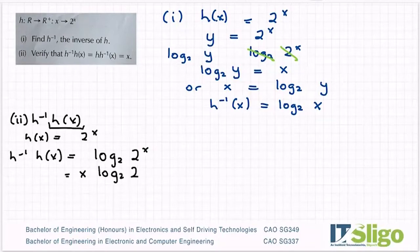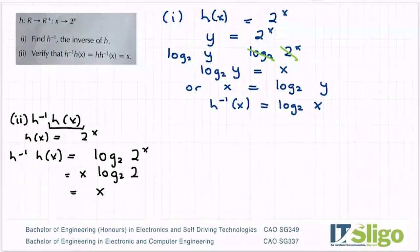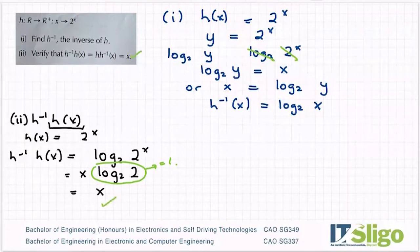If you pop on your calculator or you may know the rule, log base 2 of 2 is 1. So I'm going to get x for h^(-1)(h(x)). Okay, which is exactly what I thought I would get. The reason for that: log base of the same number is always equal to 1. Okay, so we've shown that that bit is equal to x. That's good.